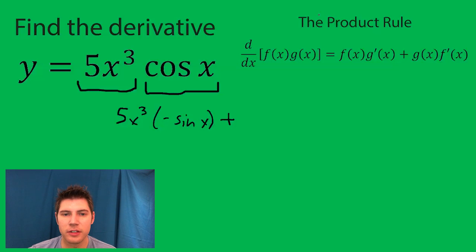Then g(x), which is cos x, times the derivative of f(x), which would be using the power rule 15x, and then we drop it down by 1, squared.